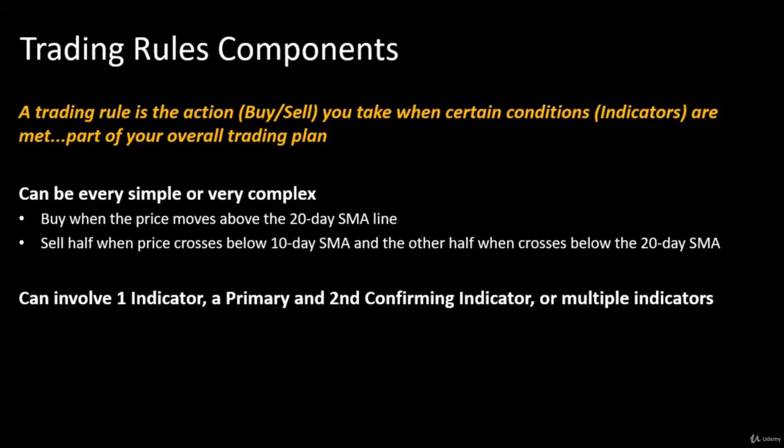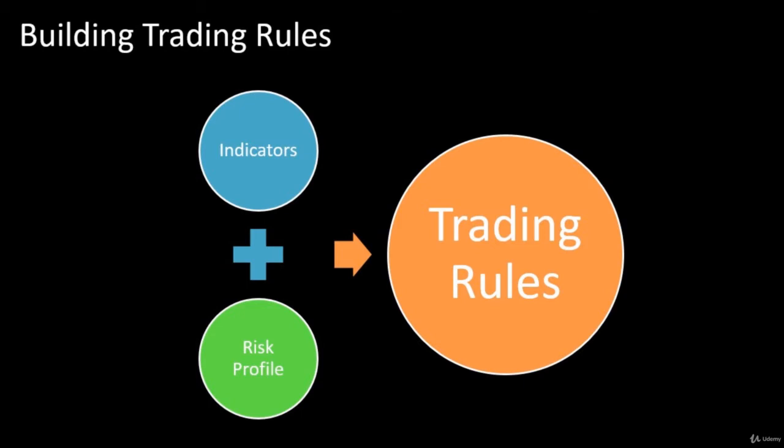Rules can involve one indicator, or a primary and a second confirming indicator, or multiple indicators. The idea is you're building out your plan and rules that support it. When you think of that, you're looking at two big things: the indicators you'd use — your tools — and your risk profile, meaning how much risk you want to take, how much profit you want to capture, or how much loss you want to avoid. Your indicators and your risk profile together will help you develop your trading rules.